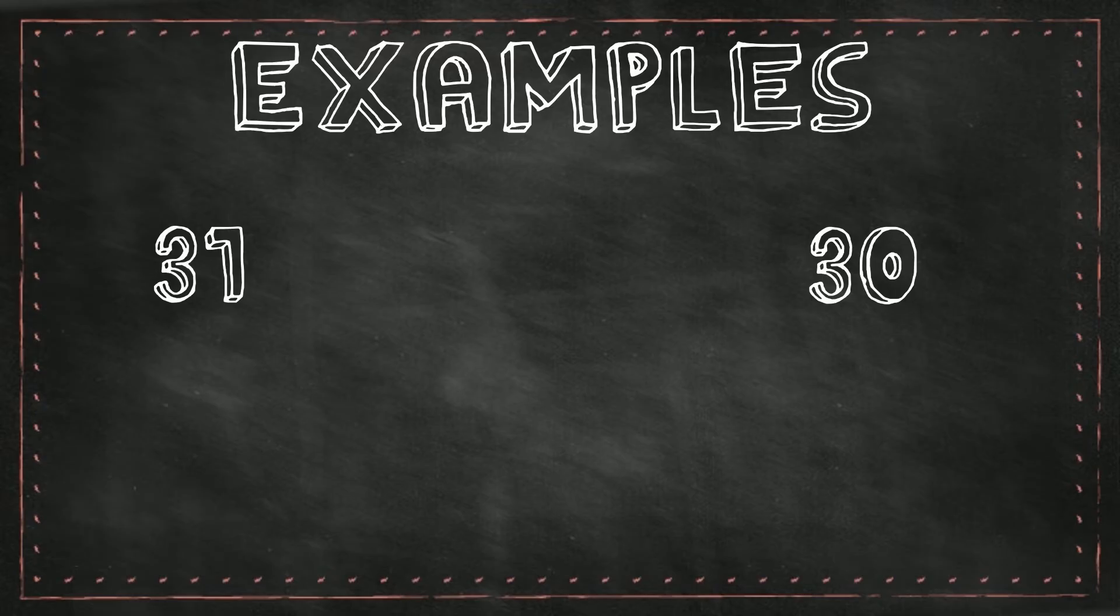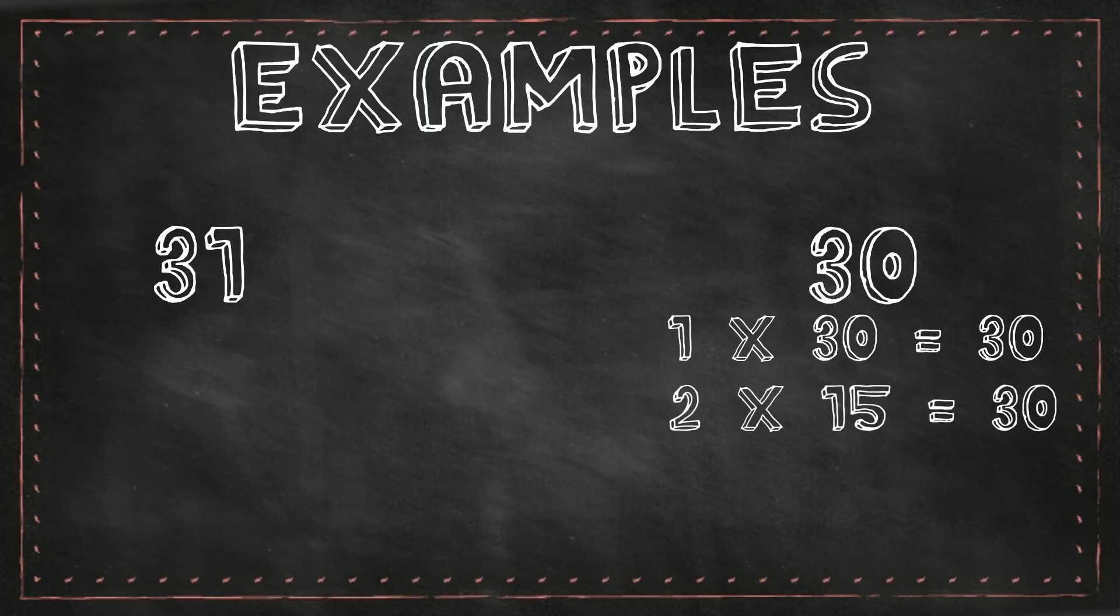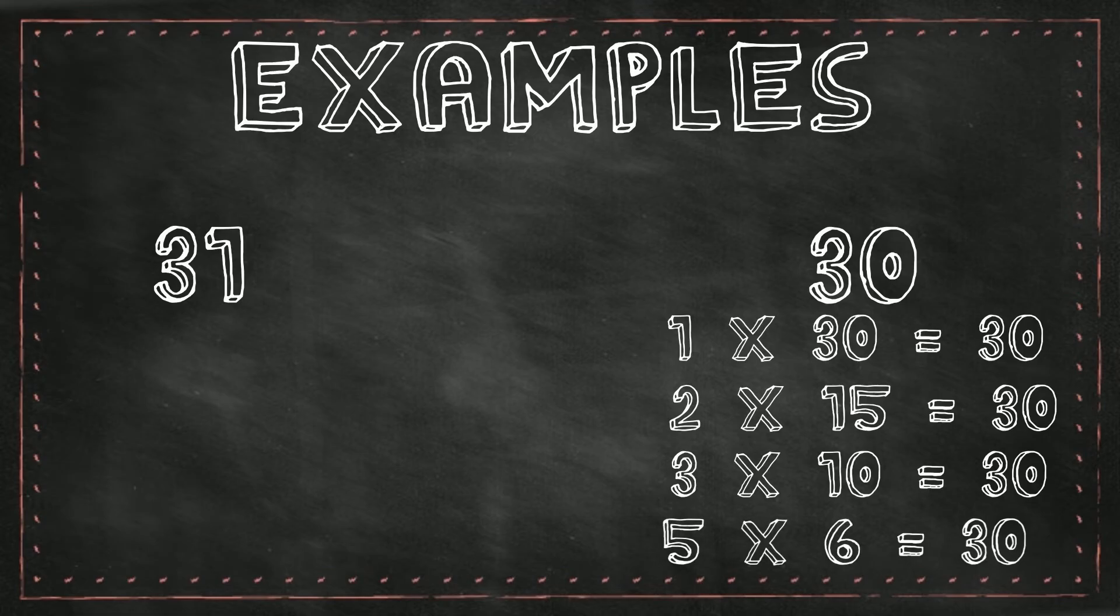30 is divisible by 1. It's even, so this means that it's also divisible by 2. You already know that it's a composite number, but it's also divisible by 3 and 5. So 30 is a composite number.